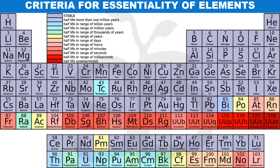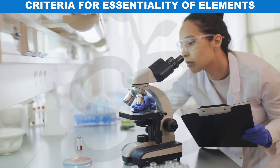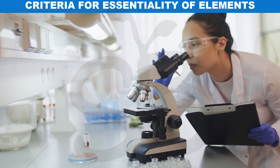Elements such as calcium, magnesium, nitrogen, and phosphorus are important. These elements are essential because, without them, the life cycle of an organism cannot be completed. Each of these elements plays an important role for organisms.